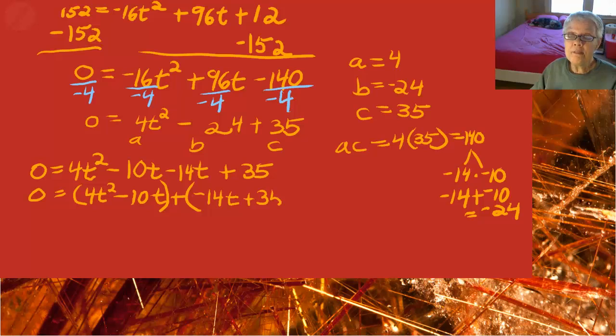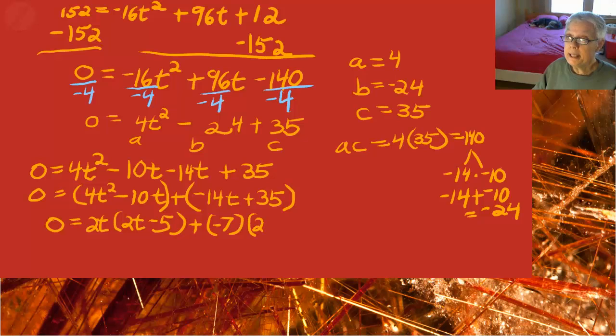Now we're going to factor out a GCF from both sets of parentheses. We'll have 2t times 2t minus 5, plus the negative GCF negative 7 times parentheses 2t minus 5.